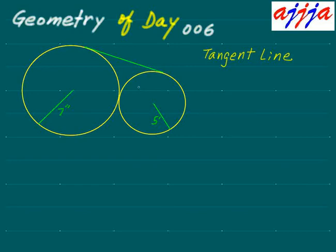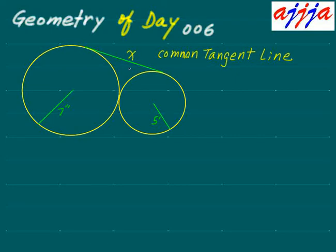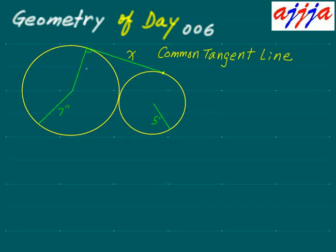This tangent line is common to both circles — that's what we call a common tangent line. We are looking for the distance of this common tangent line. Let's call it x. To solve this, we apply an additional auxiliary line. This radius goes right here — I move it right there.